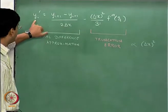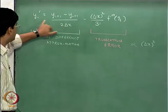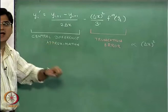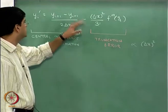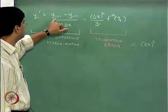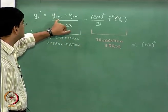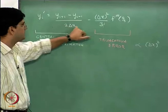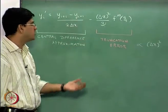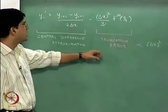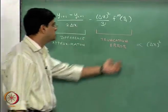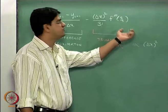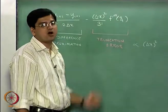In conclusion, y'(i), that is the first derivative of y(i) using the central difference approximation, is y(i+1) minus y(i-1) divided by 2 times delta x, and the truncation error is of order delta x squared.